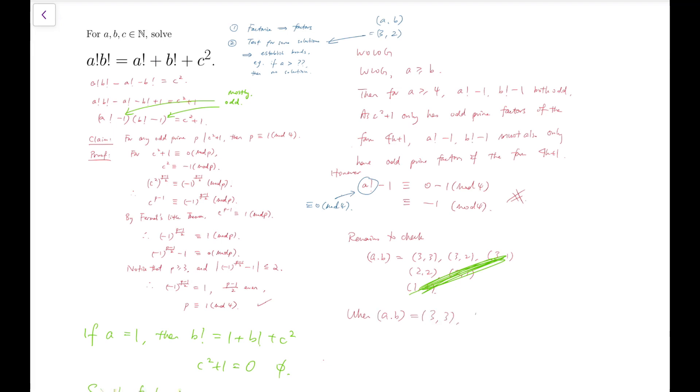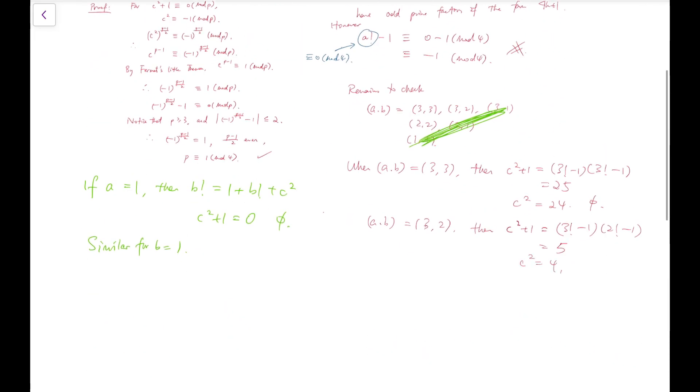When a and b are both 3, then c² + 1 equals (3! - 1)(3! - 1), which is 25. So c² equals 24, and that's no solution. For (3,2), then c² + 1 is (3! - 1)(2! - 1), which is 5. Then c² is 4, and we can say that c equals 2. And finally, for (2,2), c² + 1 is just 1. So c is 0, which is not a solution here because c has to be a natural number.